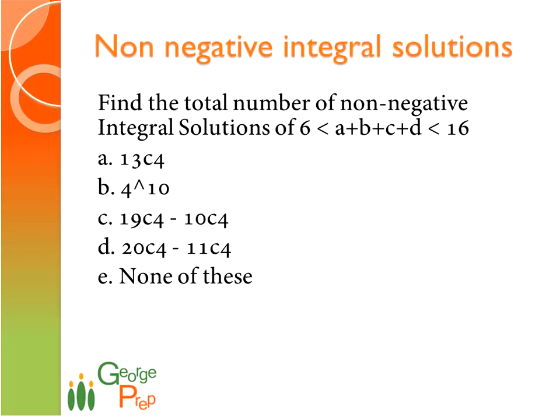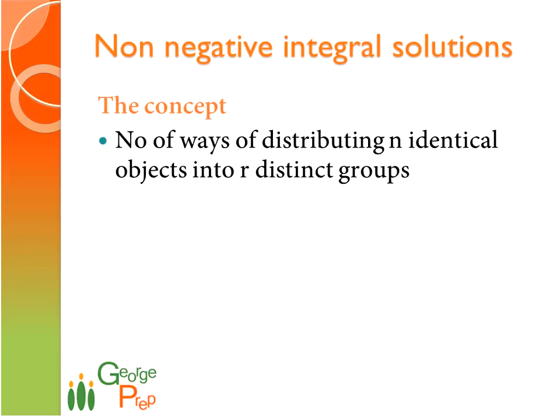Find the total number of non-negative integral solutions of A plus B plus C plus D, which has to lie in the range 6 to 16. Let us first get into the concept involved in this question. The concept is number of ways of distributing n identical objects into r distinct groups.